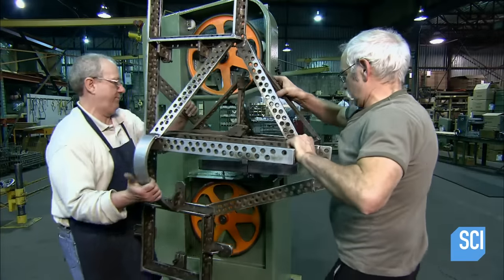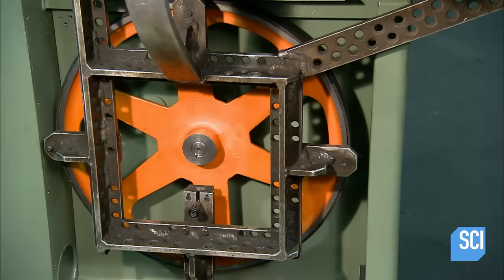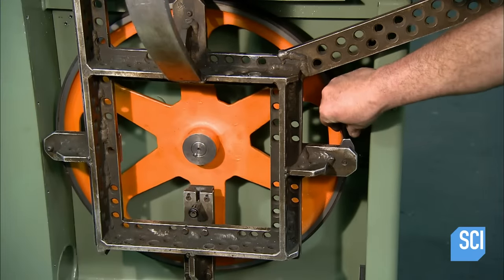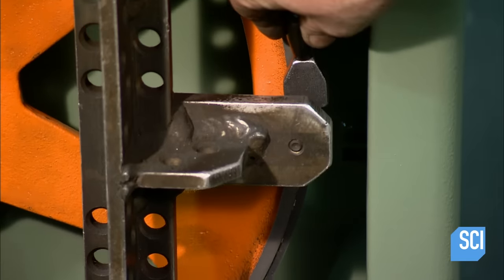Now for the most critical part of the assembly process. Workers use this jig as a precision guide to align the wheels. The wheels must be perfectly balanced to keep the saw blade stable while it's cutting.